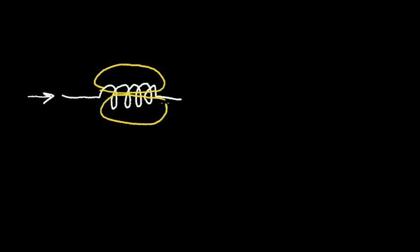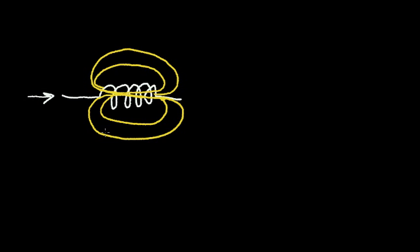So I'll just draw the magnetic field. This strong magnetic field will increase the inductance properties of this wire. The electronic symbol for the inductor is just a coil with a terminal at the top and a terminal at the bottom, and we denote inductance by the letter L.